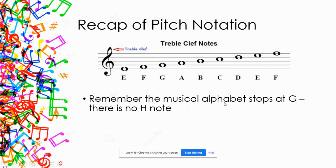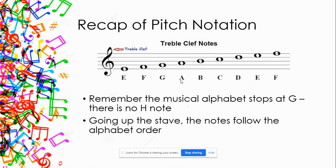Looking at these notes, we must remember that the musical alphabet stops at G. So once I go A, B, C, D, E, F, G — it repeats and goes back to A. There is no H note. There are only seven letters: A, B, C, D, E, F, G. Going up the stave, the notes follow the alphabet in order. We might start on an E in this case, but it still goes up: E, F, G — then back to A because there's no H.